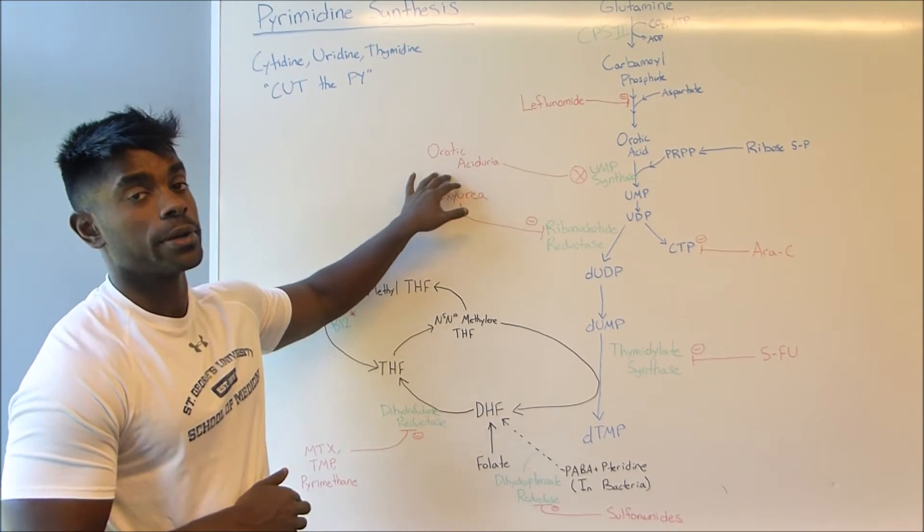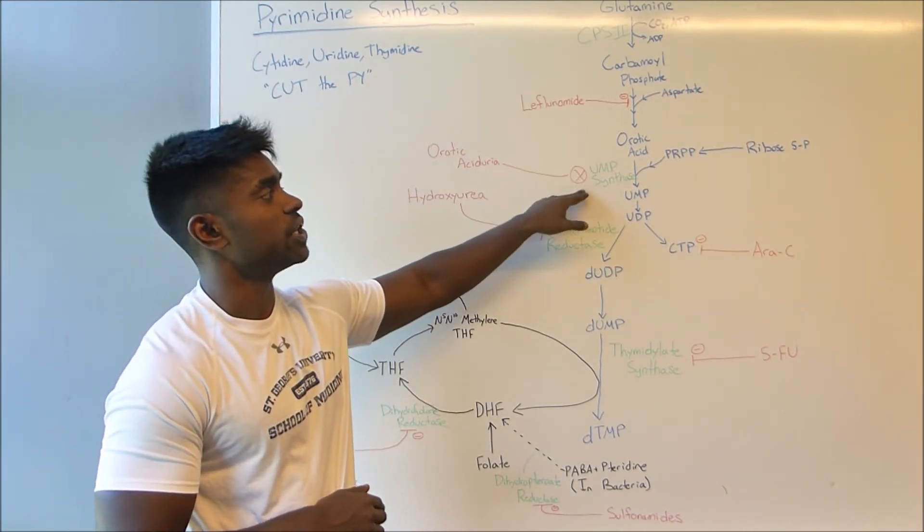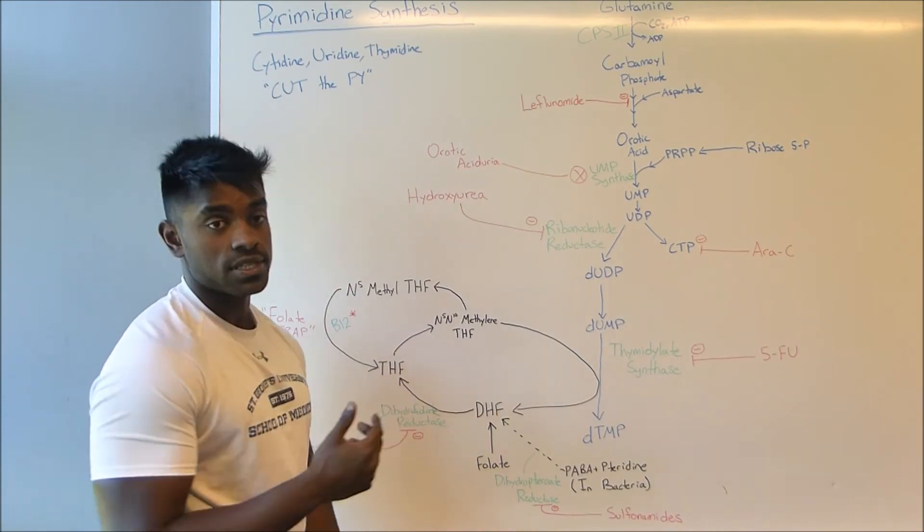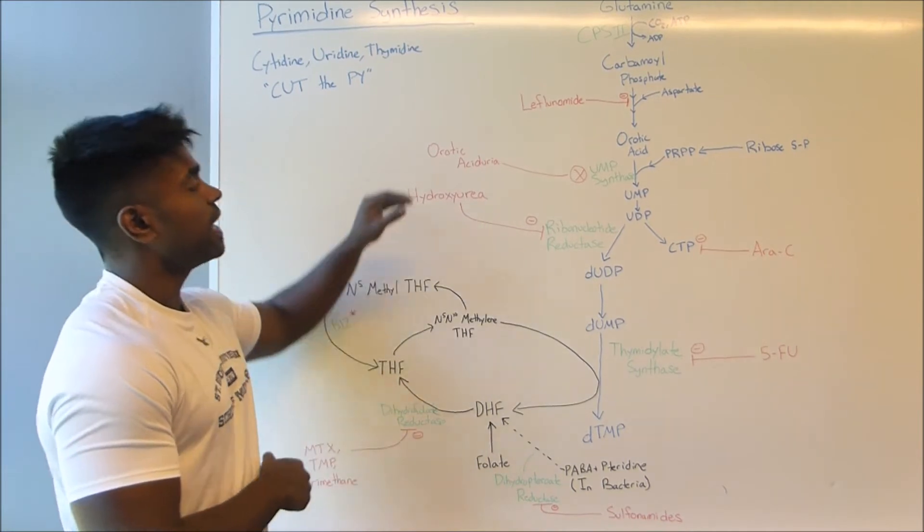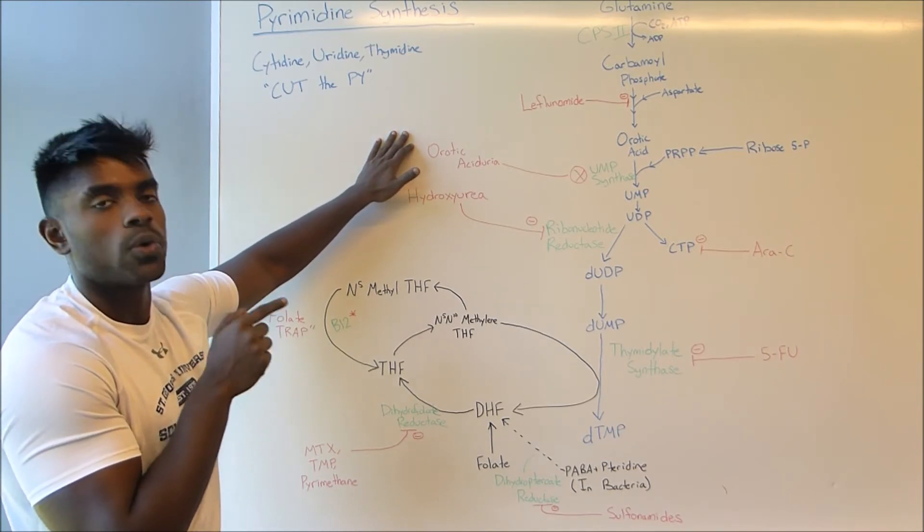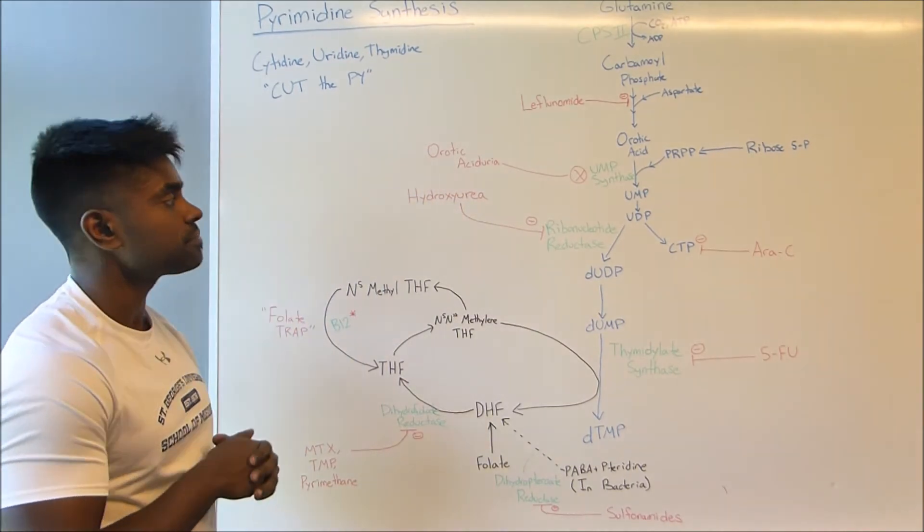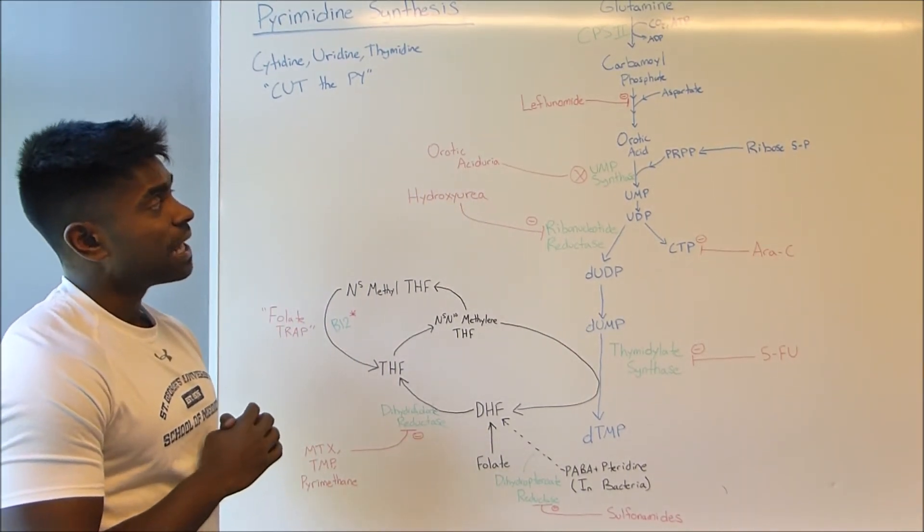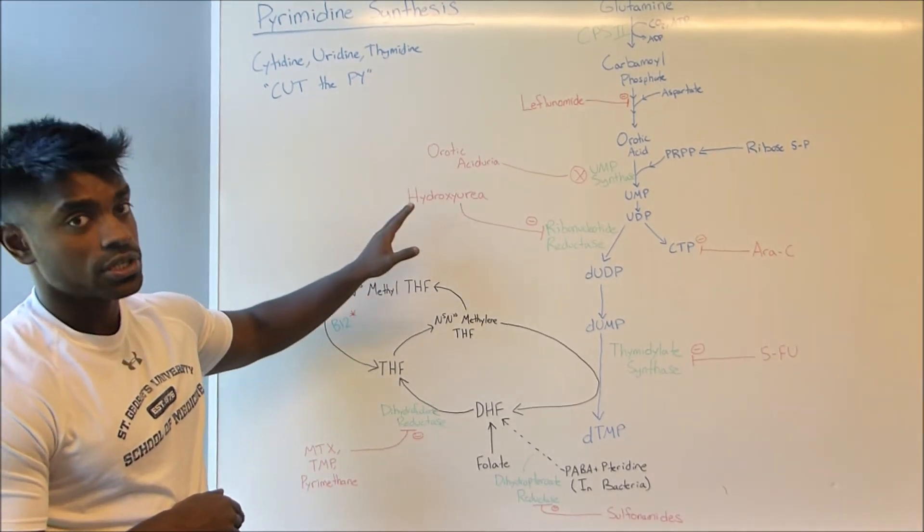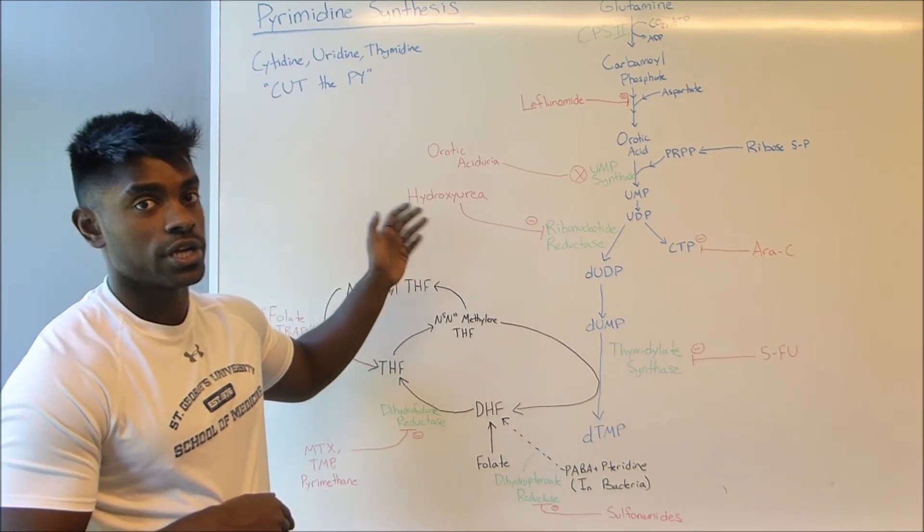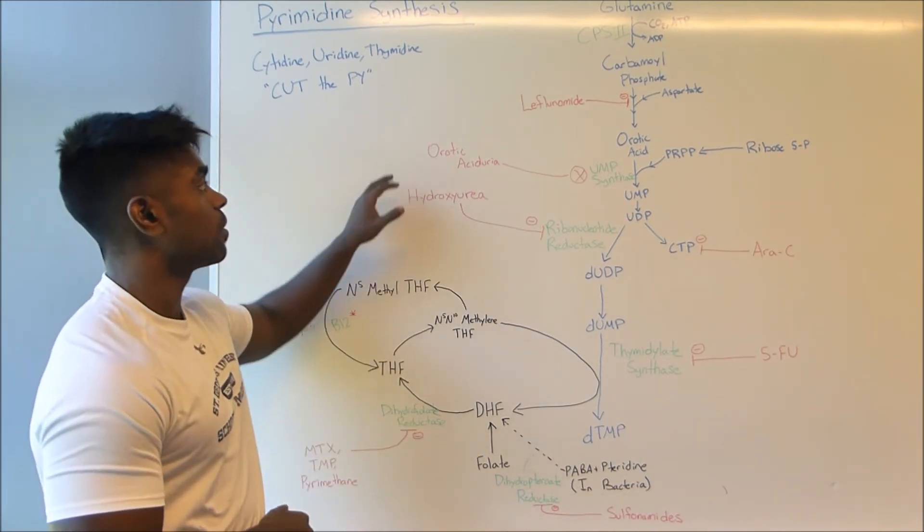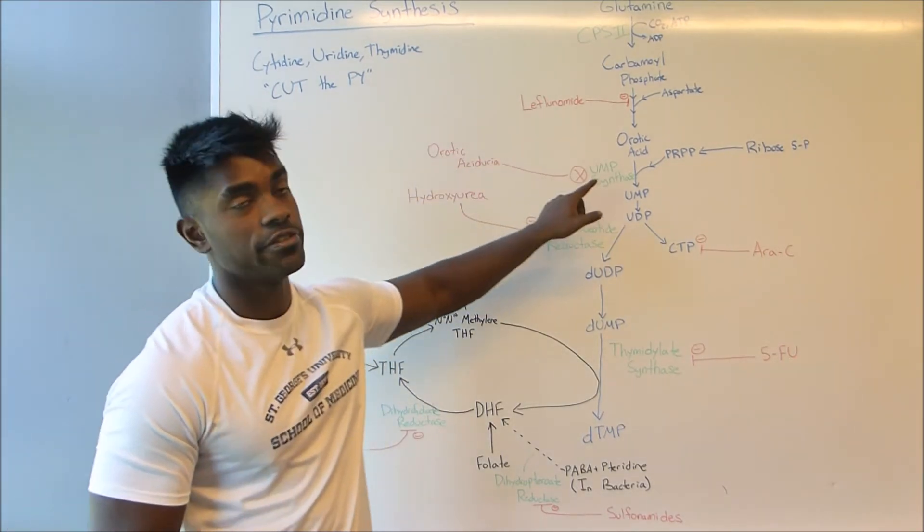Now orotic aciduria is very important to keep note of. Because as we can see if we're deficient in UMP synthase we're going to have an increase in this molecule, a decrease in UMP. So this is going to be seen as obviously tons of orotic acid in the urine. Now if you think about what else is actually involved with an increase in orotic acid, we know that ornithine transcarbamylase deficiency also has an increase in orotic acid. But what is unique in orotic aciduria is that there is no increase in ammonia, whereas there is an increase in ornithine transcarbamylase deficiency. So that is a very important point for your boards because if you see there is no increase in ammonia but there is an increase in orotic acid, then you know we're talking about this guy and there's going to be deficiency in UMP synthase.